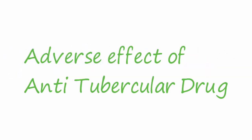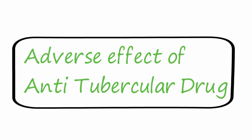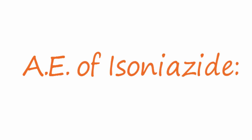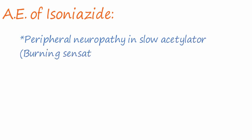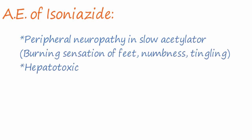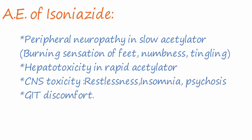Today we will discuss the adverse effects of anti-tubercular drugs. First, the adverse effects of isoniazid, which include peripheral neuropathy in slow acetylators — burning sensation of feet, numbness and tingling sensation — and hepatotoxicity in rapid acetylators.